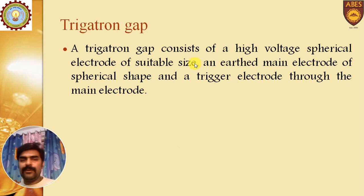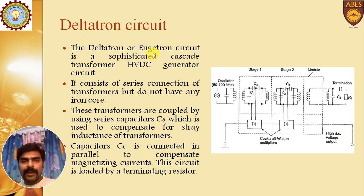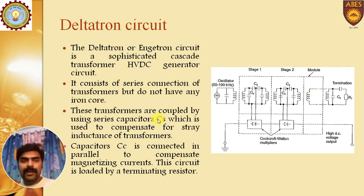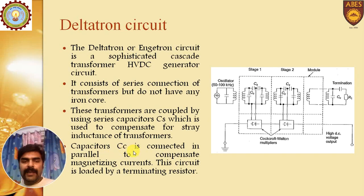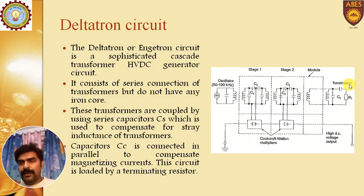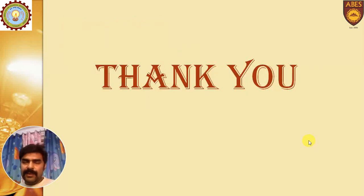The next topic is the Deltatron or Injectron circuit, which is a cascaded transformer HVDC circuit. It consists of a series connection of transformers without any iron core — stage one, stage two, and further modules. These transformers are coupled by series capacitors Cs, and a capacitor Cc is connected in parallel to compensate magnetizing current. The circuit is loaded by a terminating resistor and is used for the generation of high voltage.